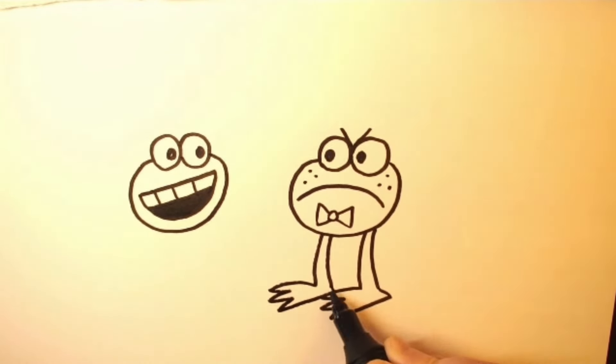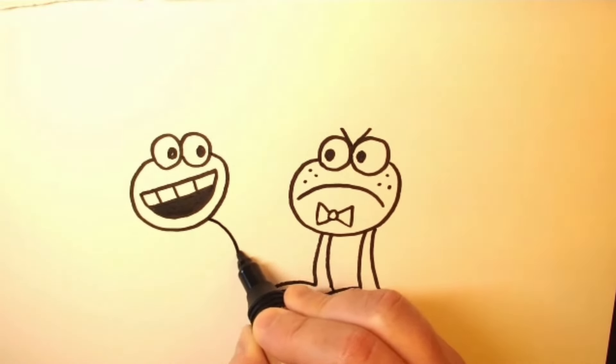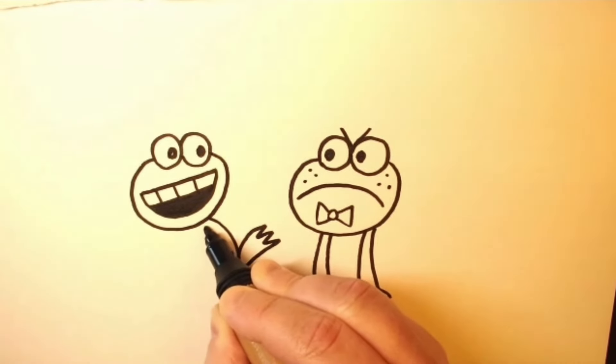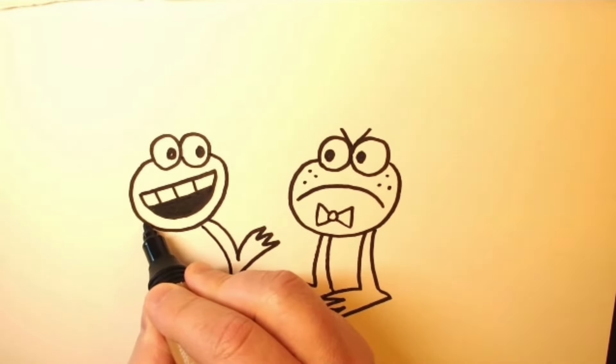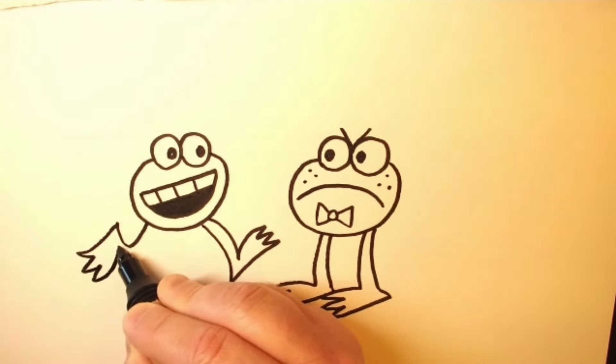And for this character you can draw her running, you just put one leg out in front and the other leg curves up like that. There we go.